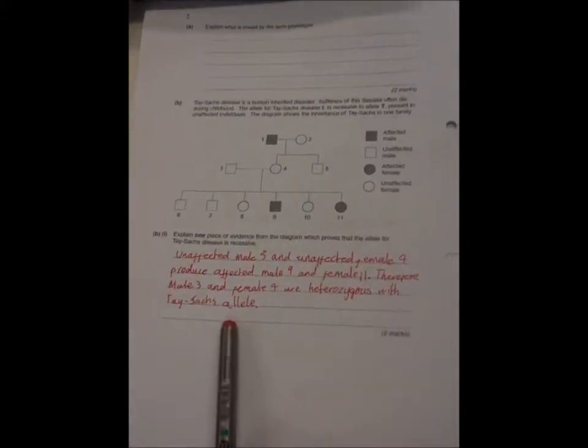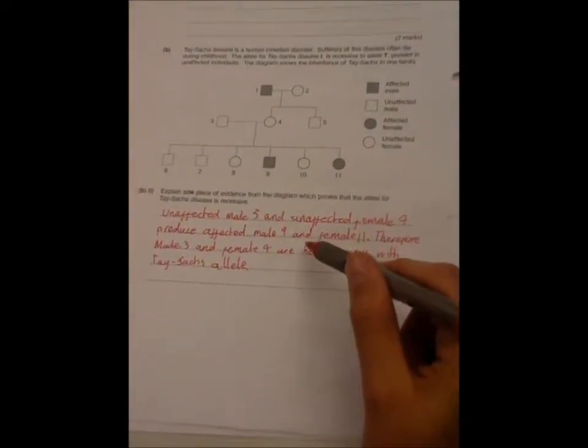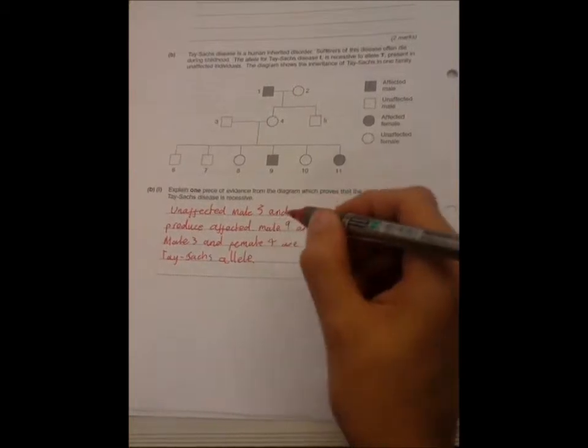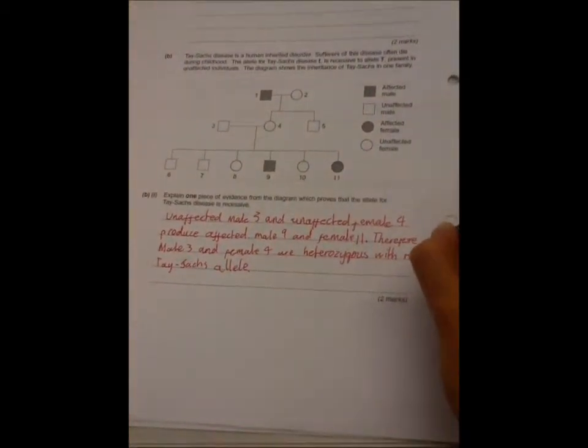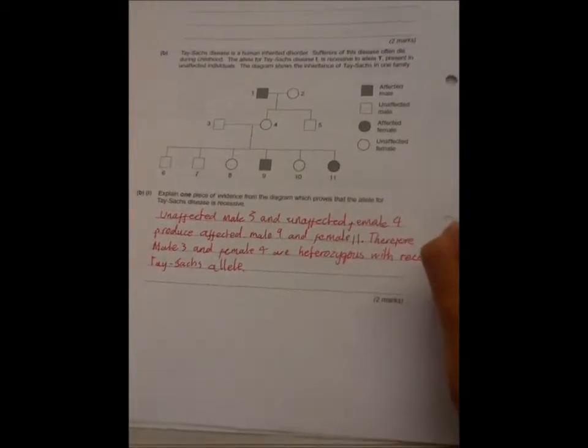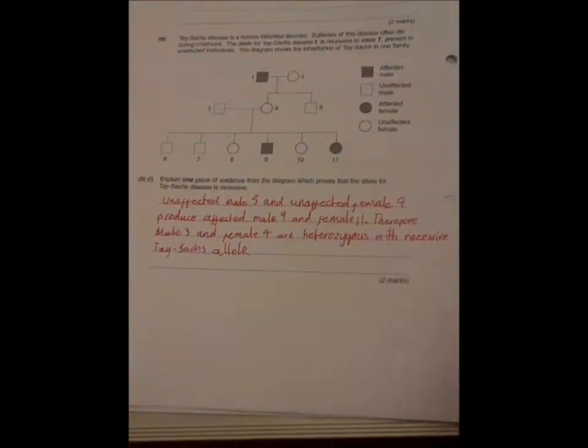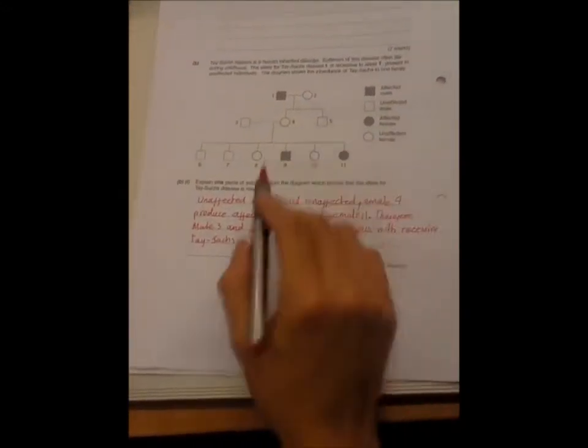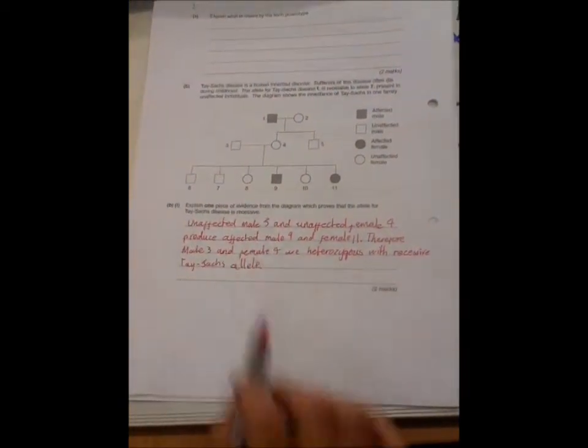So that would get you two marks by identifying the unaffected females and affected males and then mentioning that they're heterozygous with the Tay-Sachs allele. And you could also add recessive just to show that because they're unaffected but they have the allele that is recessive, to relate it back to the question. So that would get two marks, and remember to mention the numbers as well, which is important because they want evidence from the diagram.